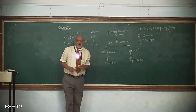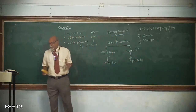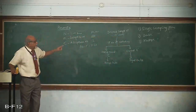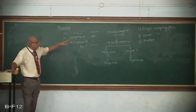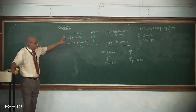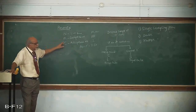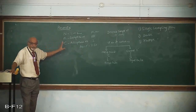For single sampling plan, there are only three parameters: lot size N, sample size small n, and acceptance number C. This is how it works.